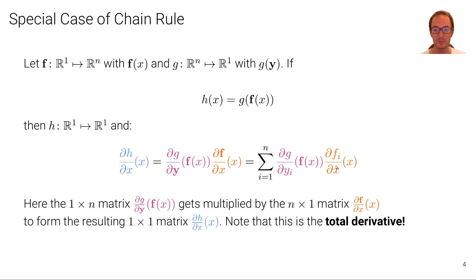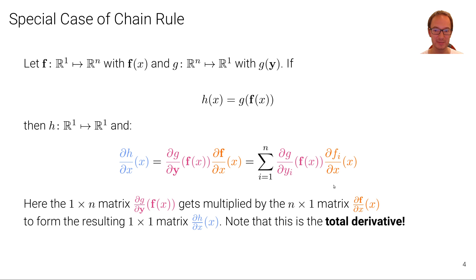If we inspect this closely, we observe that through the rules of vector-to-vector derivatives, we have derived the total derivative that we've seen before. This is exactly the expression for the total derivative: we have a vector-valued quantity in between, a function that depends on multiple variables, and each of those variables may depend on the quantity we seek to differentiate with respect to — which is why we have a sum. This is the connection between vector calculus and the total derivative.